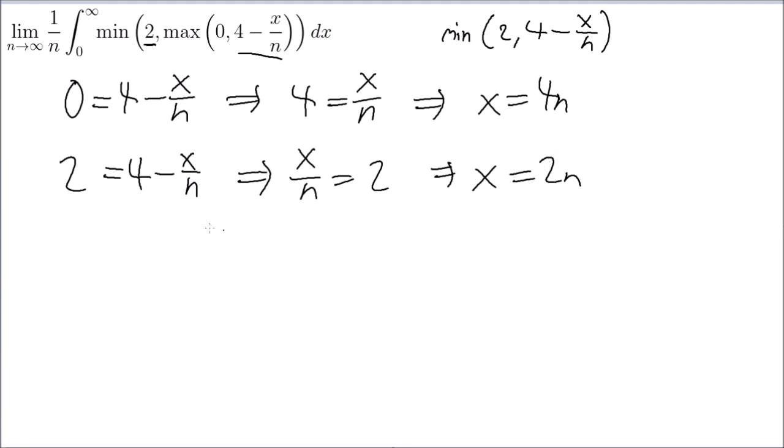Alright, I know where to go from here. So what this means is I need to split my integral 0 to 2n, 2n to 4n, and then 4n to infinity. Okay? So that's what that means. So I need to write that down. 2n, 4n, infinity, 0.